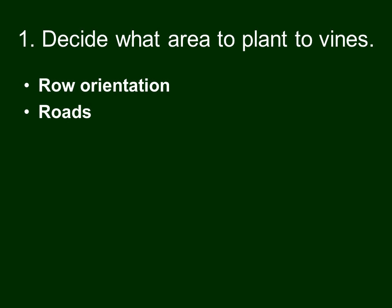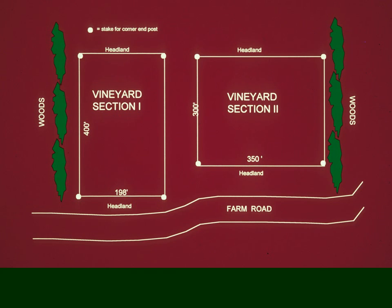Roads — how do you get to the vineyard? How do you get into the area of the vineyard to work it in the first place? Here's a schematic from a publication showing a farm road that gives you access to the vineyard sections. You need to consider how you get to the vineyard. There's also a woods on the left and right sides, and you might want a little access roadway along those woods to make it easier to get from one end of the vineyard to the other without going through it.